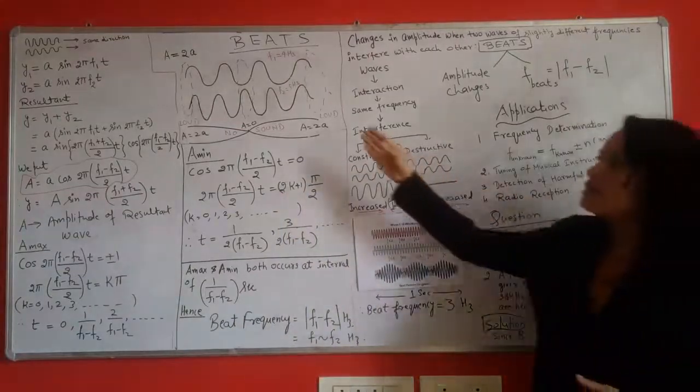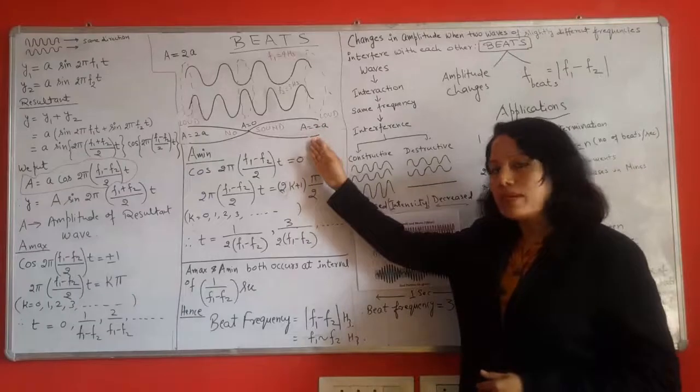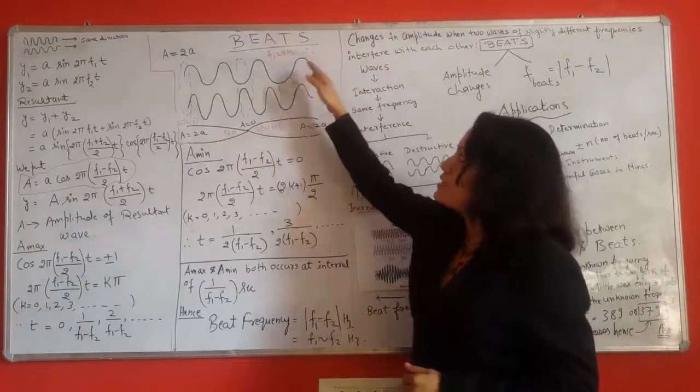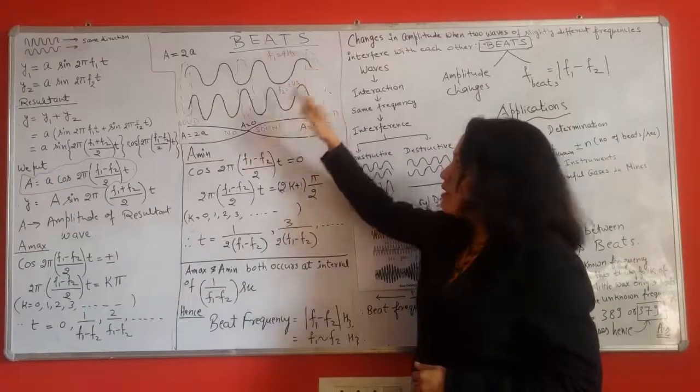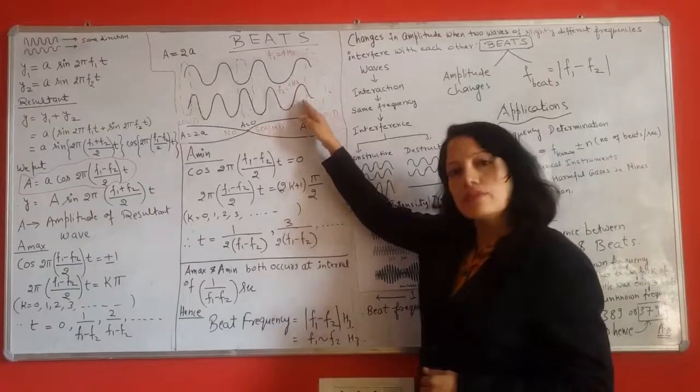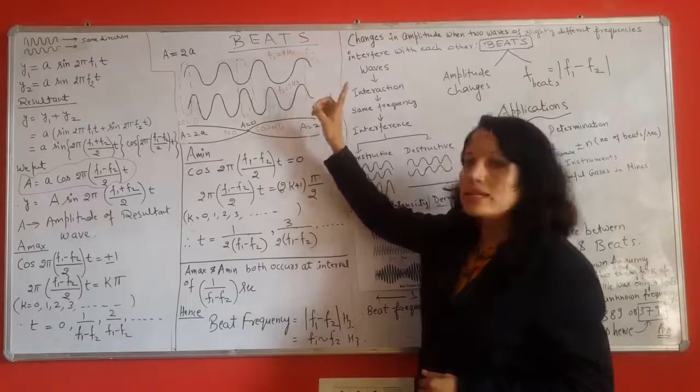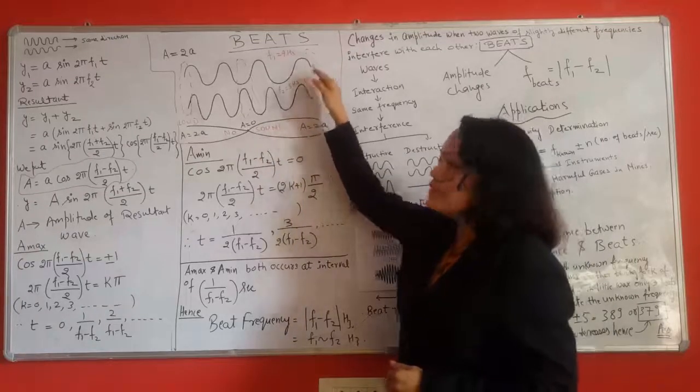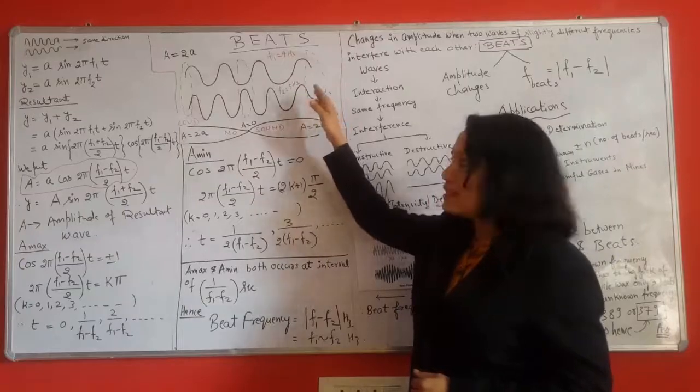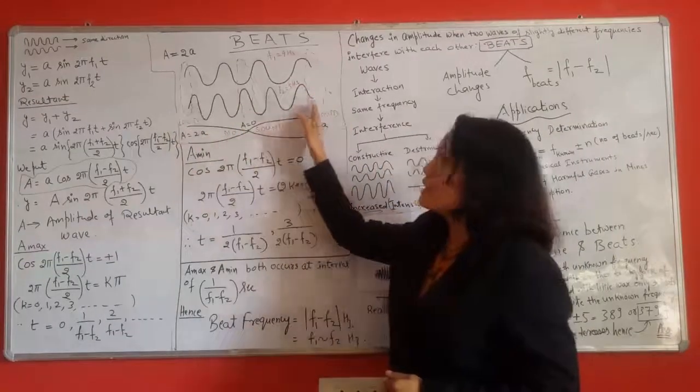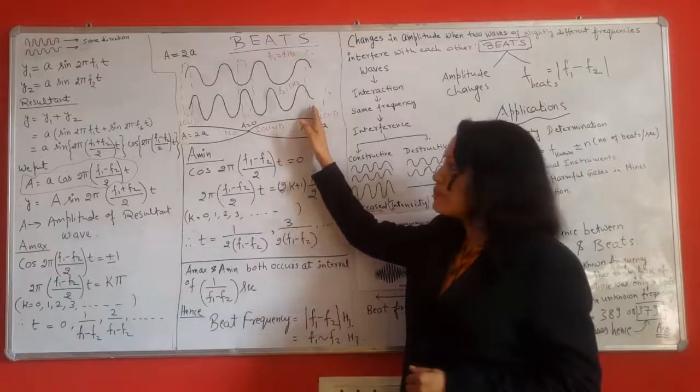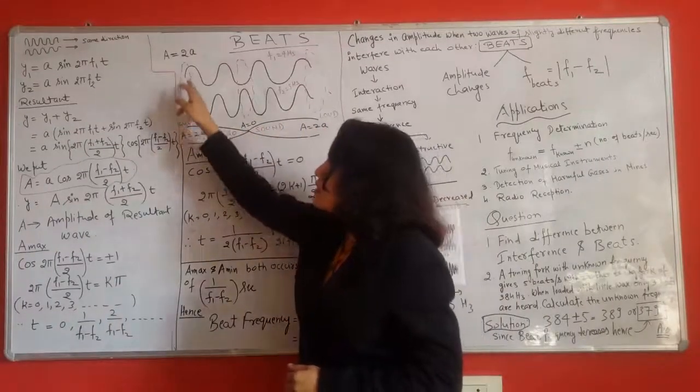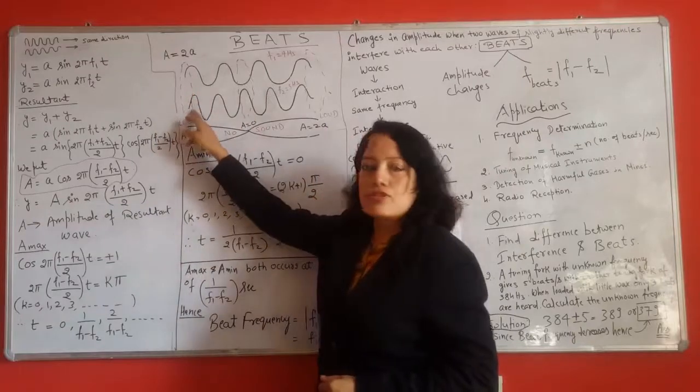Here in this diagram, there are two different waves of slightly different frequencies. The frequency of first wave is 4 Hz and the frequency of second wave is 5 Hz. So there is 1 Hz frequency difference between these two. When both of them interfere with each other, we see that there are three different points which are marked in this diagram. The first point here the two waves are interfering constructively.